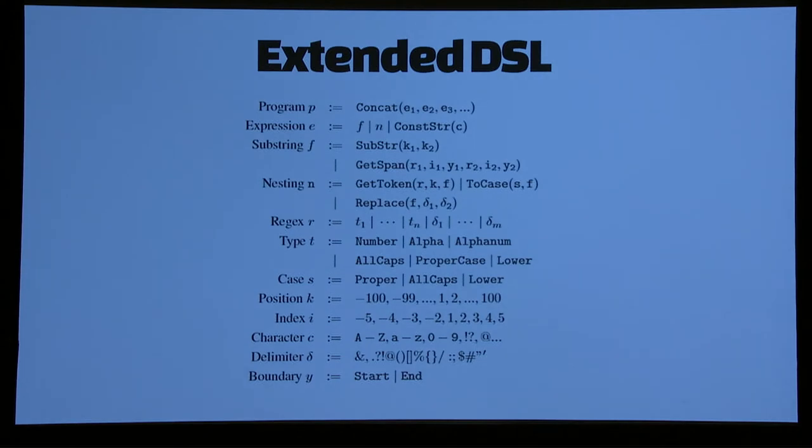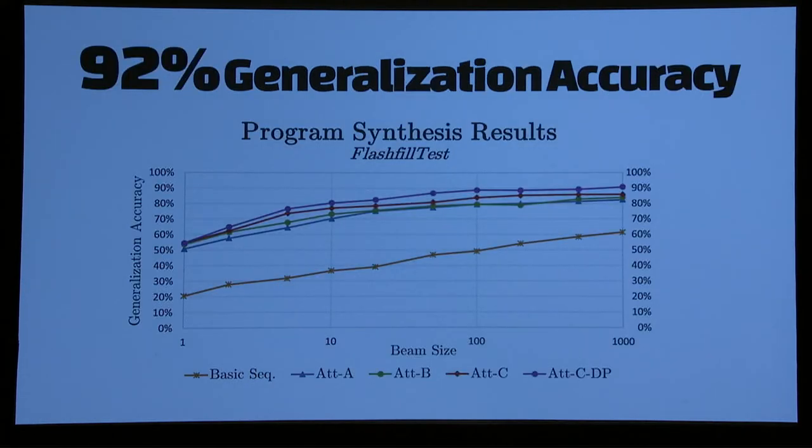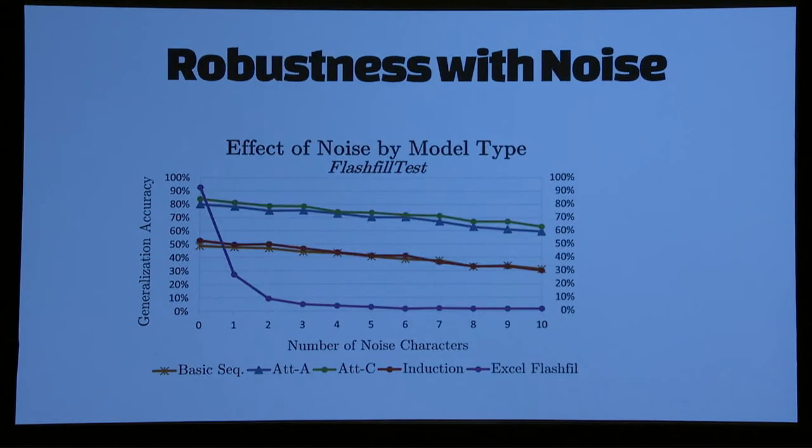This system was working so well that we even went ahead and added new constructs in the DSL, added all kinds of new functionalities. This was something which was difficult to do in the previous version of Flash Fill. Every time we would need to add a new operator, it would break down many of the assumptions and we'd have to come up with a new algorithm. But here we can just generate more training data and train the system.